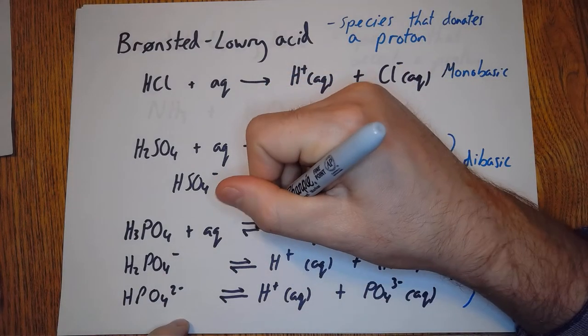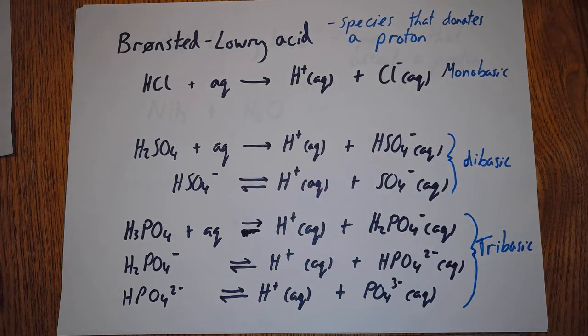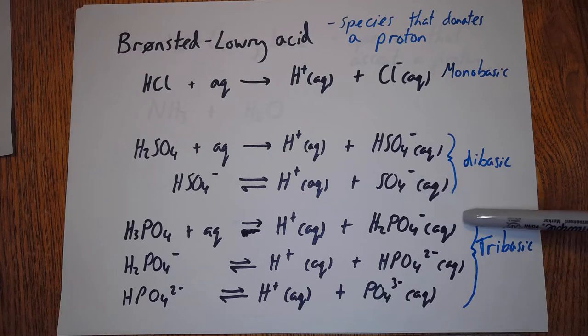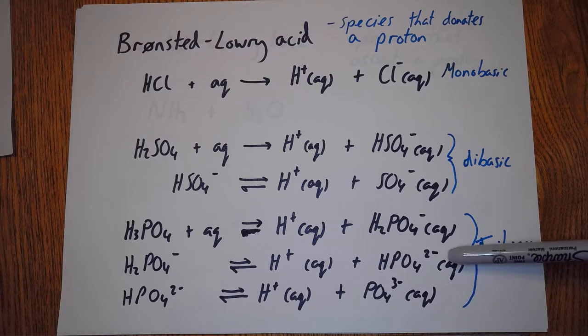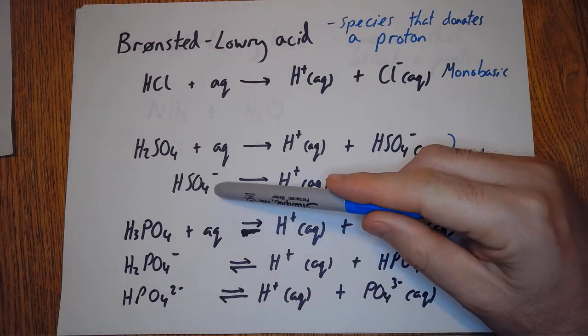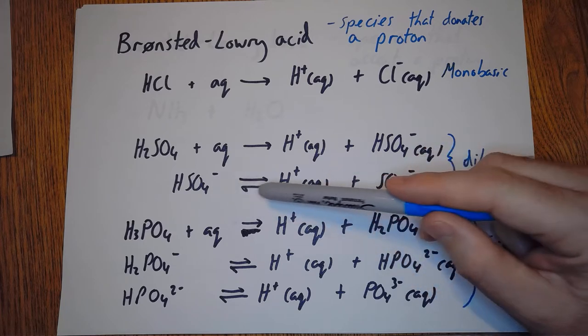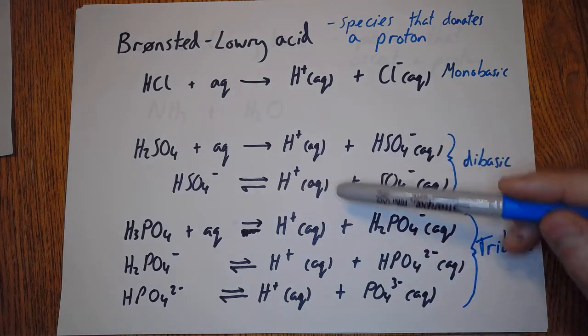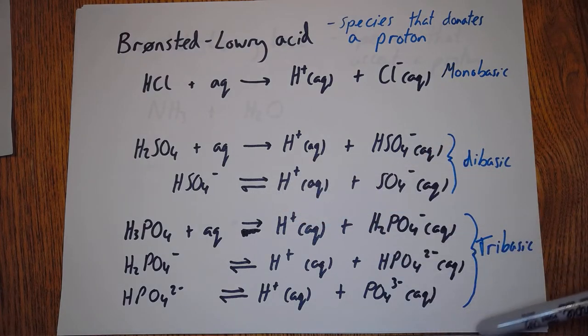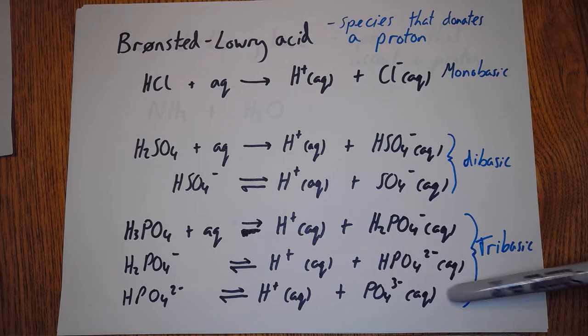Phosphoric acid - the first hydrogen is donated as a strong acid, then the second and third it loses as a weak acid. The reason for this is because you're trying to take an H+ away from something that is negative - it's hard to do. The positive ion is attracted to the negative ion. This can lose three hydrogens altogether, so it's called tribasic.